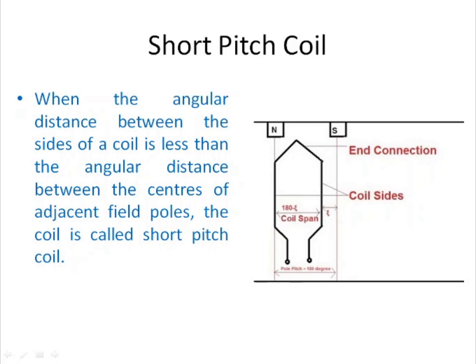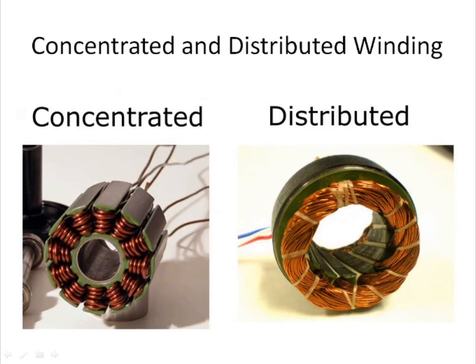In a short pitch coil, when the angular distance between the sides of the coil is less than the angular distance between the centers of the adjacent field poles, the coil is termed as a short pitch coil. The distance between two coil sides in a short pitch coil is less than 180 degrees electrical.